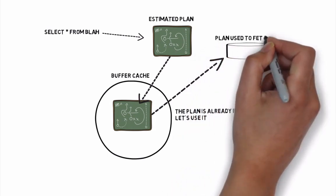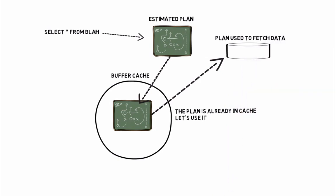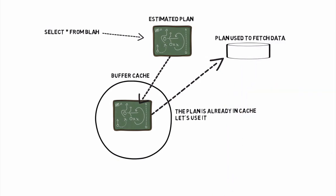A piece of software that does that is called the lazy writer process. It's an internal process that works to free all types of cache, including the plan cache, periodically scans the objects in the cache, and decreases the value by one each time.